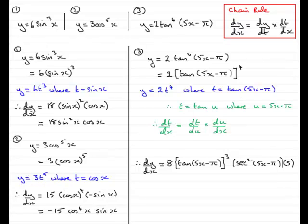Hope you've been able to follow that. And all we need to do now then is just simplify our answer. We've got 8 times 5 which is going to be 40. As for this [tan(5x - π)]³, I can write that in as tan³(5x - π), and then just finish off with sec²(5x - π). And there you have it.